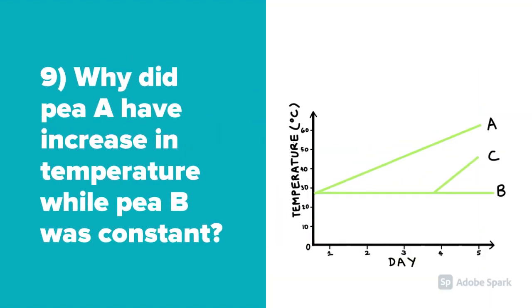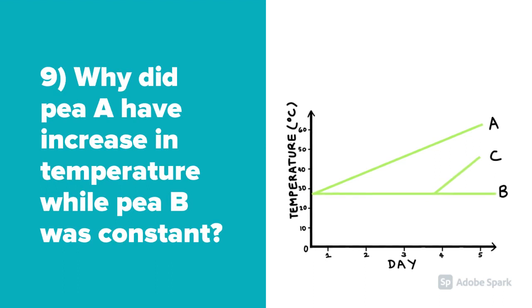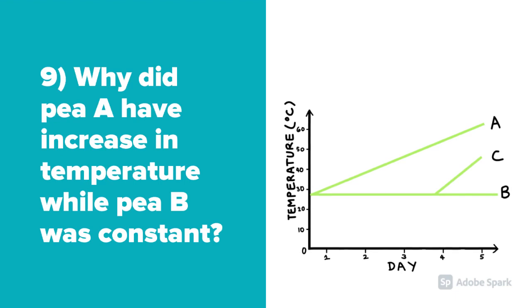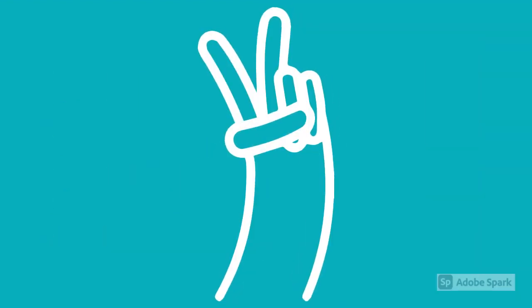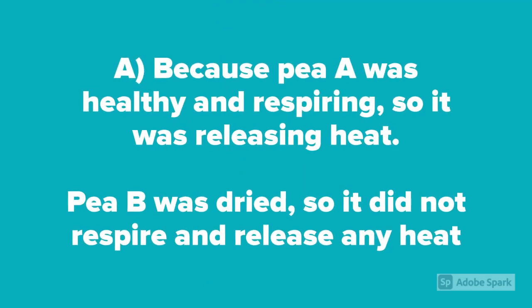Question number nine: Why did PA have an increase in temperature while PB was constant? This is because PA was healthy and respiring, so it was releasing heat, whereas PB was dried, so it did not respire or release any heat.